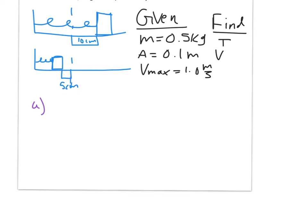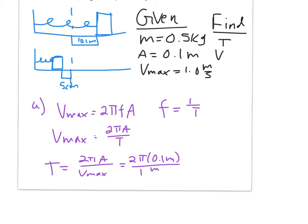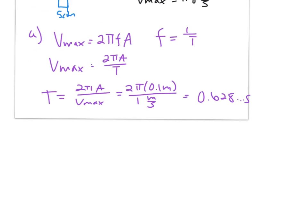For Part A, we use V-max equals 2 pi f A, and since f equals 1 over T, this becomes V-max equals 2 pi A over T. Solving for period: T equals 2 pi A over V-max. Substituting: T equals 2 pi times 0.1 meters divided by 1 meter per second, which equals approximately 0.628 seconds, so the period is about 0.6 seconds.